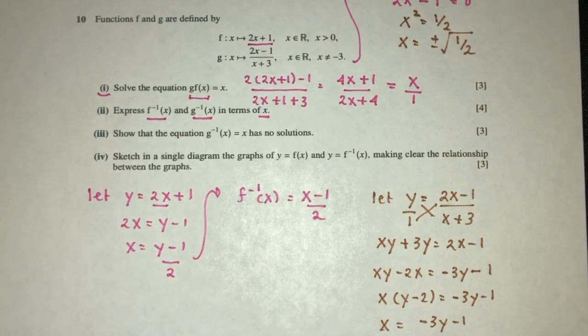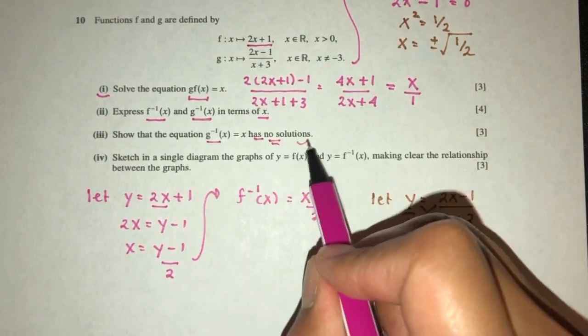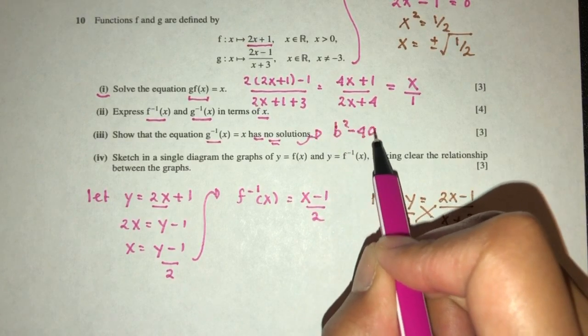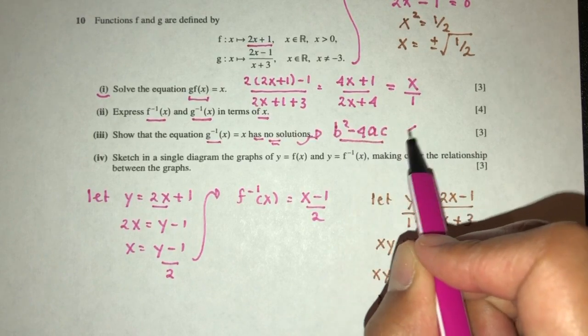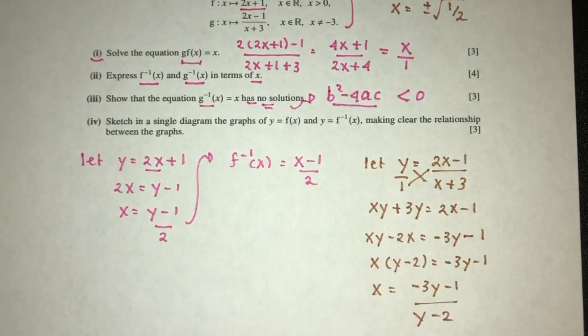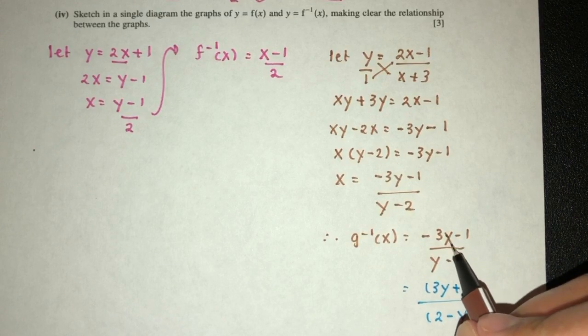Now for part 3, we have to show that the equation this has no solutions. So no solutions, we have to look at the discriminant, b squared minus 4ac. When it has no solutions, it means this has to be equal to less than 0. So let's see what can we do here. So g inverse of x is equal to, so here I forgot something, it needs to be in terms of x.